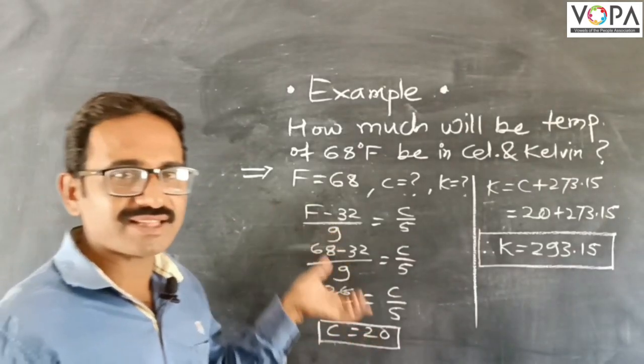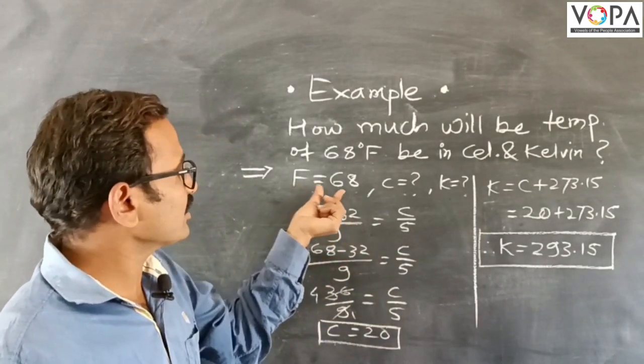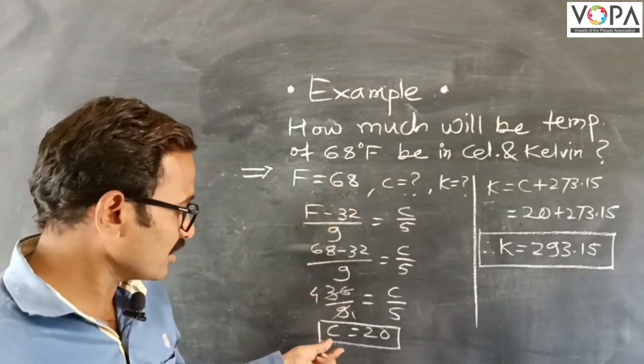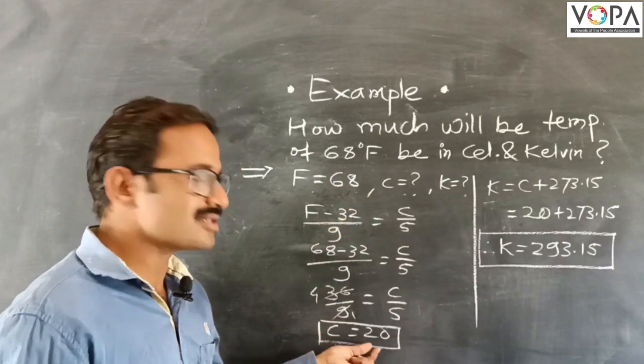Therefore, we can say that the Fahrenheit temperature is 68 degrees. Therefore, in degree Celsius it is 20 degrees.